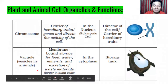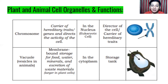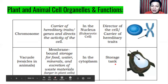Next, we have vacuole — found in both plants and animals. It is a membrane-bound storage for food, water, and minerals, and also responsible for excretion of waste materials. Vacuoles are larger in plant cells; in animal cells they are small, like a vesicle. Plants need a lot of water, so the vacuole is a very big organelle in plant cells. It is located in the cytoplasm — the storage tank or storage area.